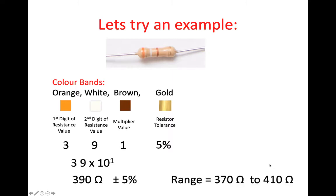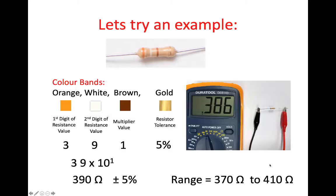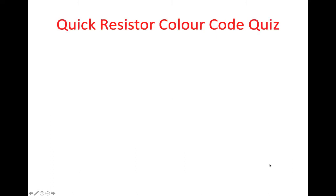That gives us 390 ohms, plus or minus 5%. The 5% range means from 390 ohms you can expect plus or minus 5%, so that resistor should fall within 370 ohms to 410 ohms. A measurement of this resistor gave exactly that — 386 ohms — so it's within that range.